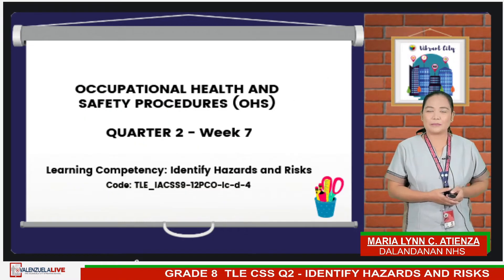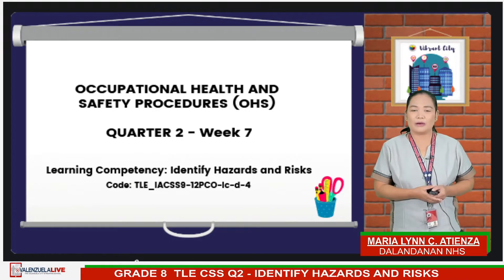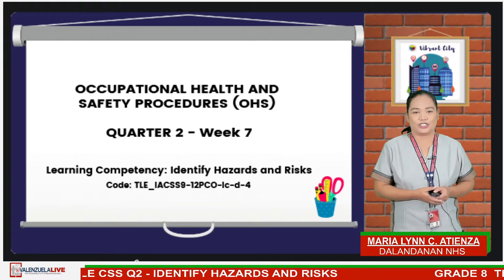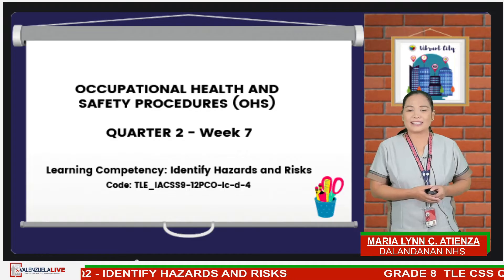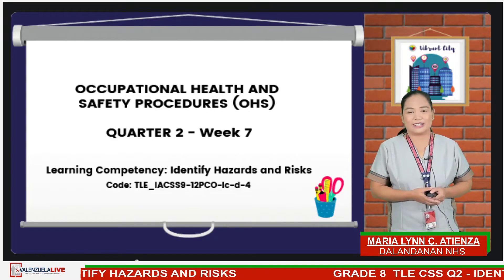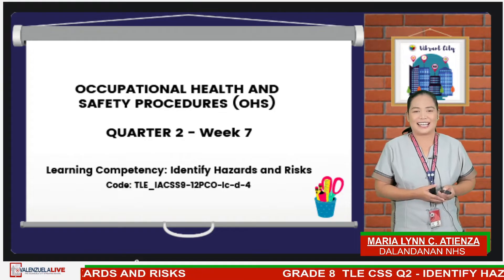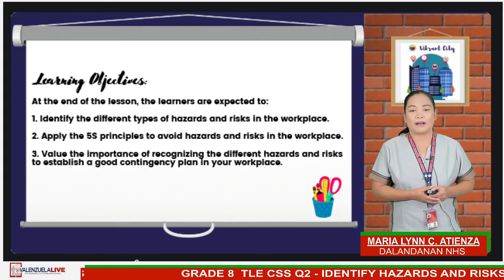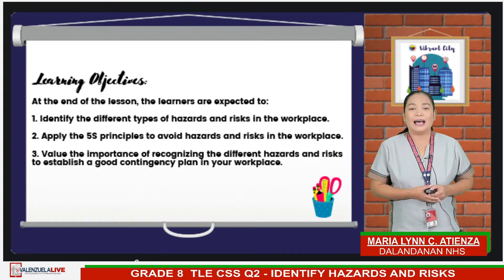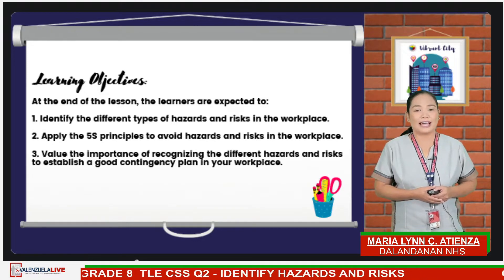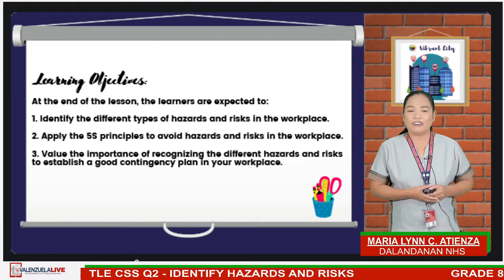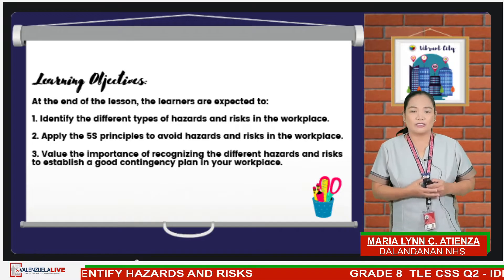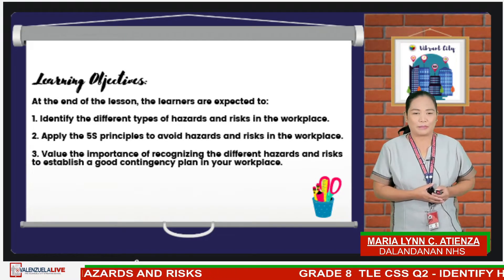Since all are prepared to learn, let me introduce our topic. Today, we are going to talk about occupational health and safety procedures. We are now in Quarter 2, Week 7, and our learning competency is to identify hazards and risks. At the end of this topic, you are expected to identify the different types of hazards and risks in the workplace, apply the 5S principles to avoid hazards and risks, and value the importance of recognizing hazards and risks to establish a good contingency plan.